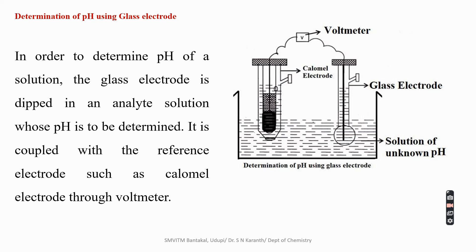The glass electrode is dipped in an analyte solution whose pH is to be determined. Then it is coupled with the reference electrode such as calomel electrode through voltmeter. The construction can be shown in the diagram.